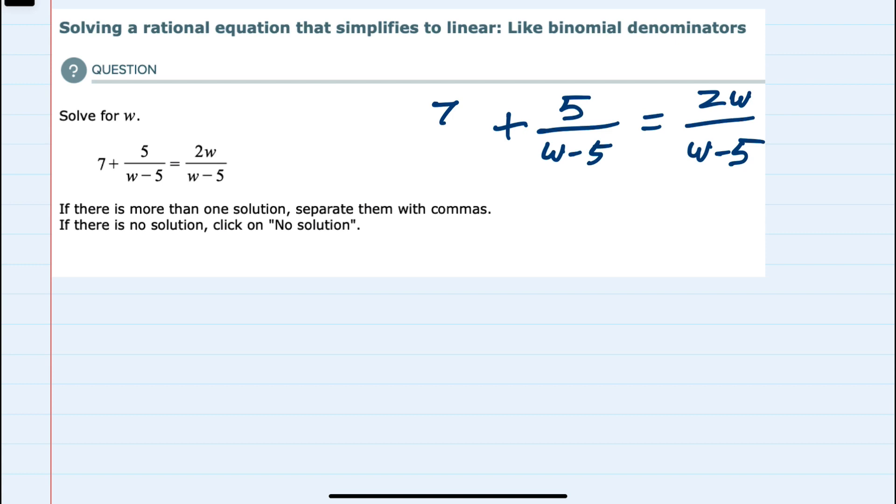When solving an equation that has fractions on both sides, what we would like to do is identify the lowest common denominator and multiply throughout by that denominator to get rid of the fractions.